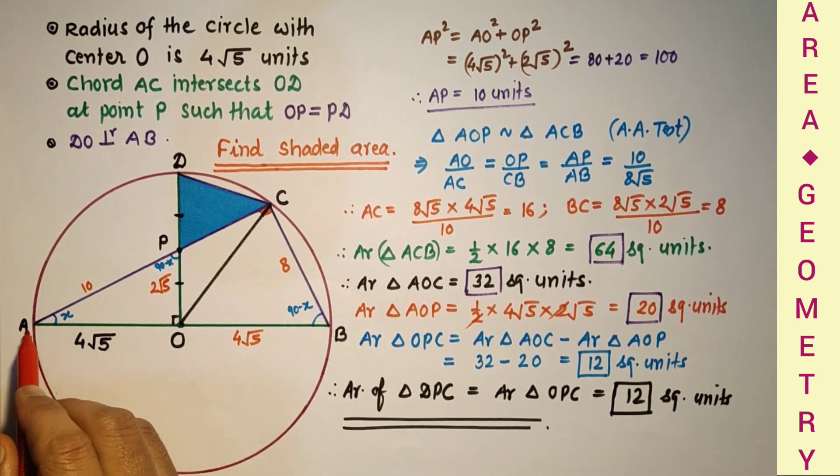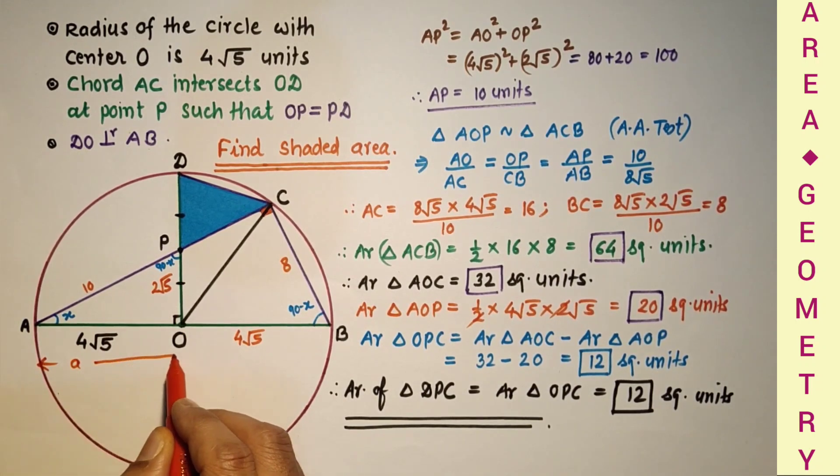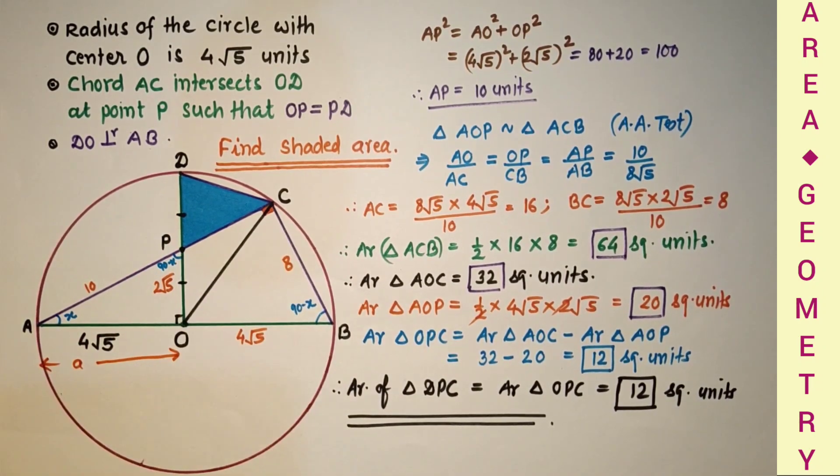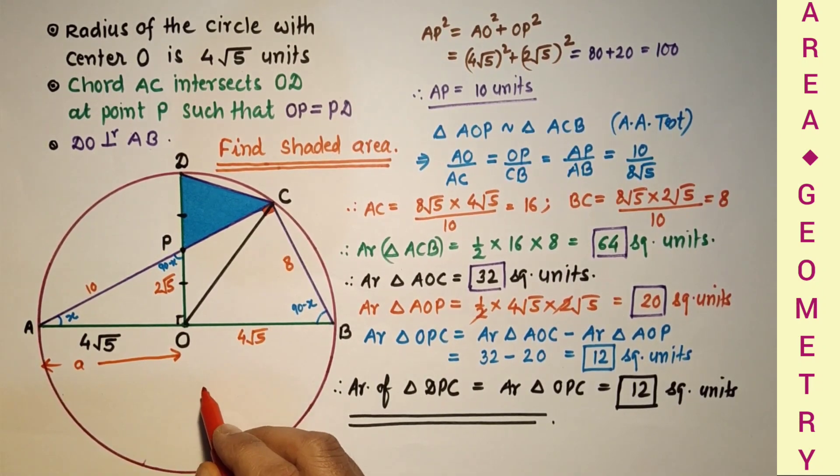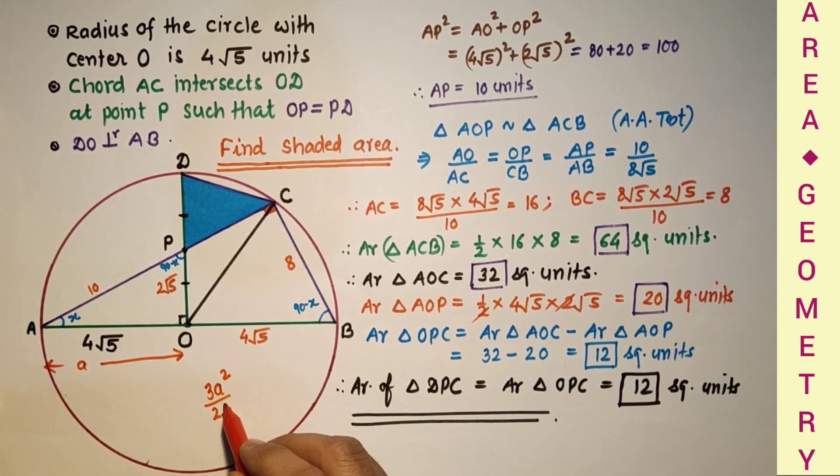In general, if radius is a unit, then area this shaded portion will be 3a² over 20 square units.